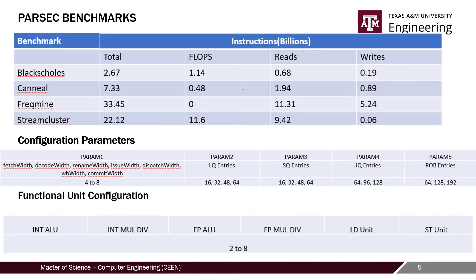We used four benchmarks from the Parsec Benchmark Suite for simulating with our out-of-order model: Blackscholes, Canneal, Freqmine, and StreamCluster. These benchmarks have a good distribution of integer, floating point, and read-write instructions, and hence we selected these.